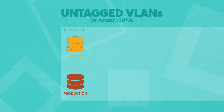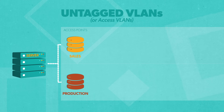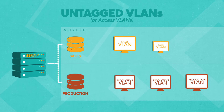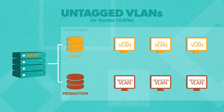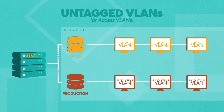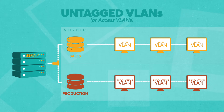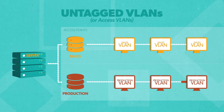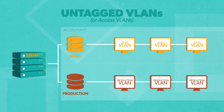Untagged or access VLANs are connected to hosts, usually servers, that pass VLAN information to and from each network and cannot differentiate between any VLAN configuration. In this way, untagged VLANs have a more linear structure, moving from A to B rather than from A to B, C, and D. Generally, untagged VLANs are the default.